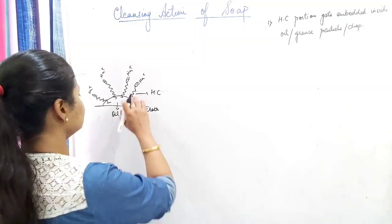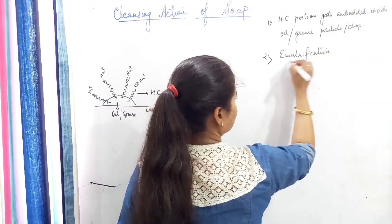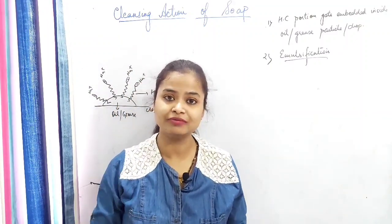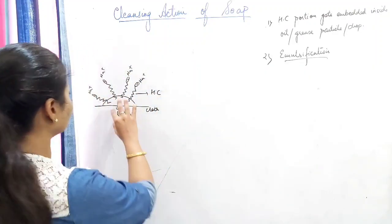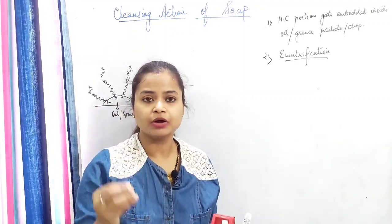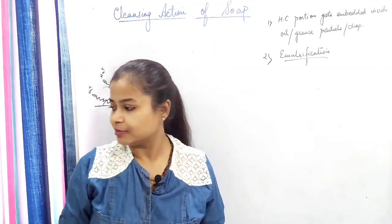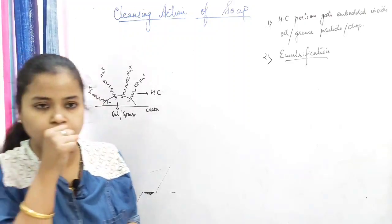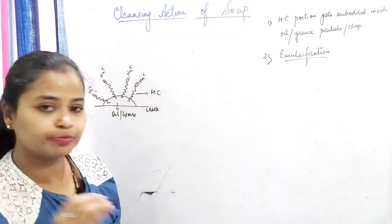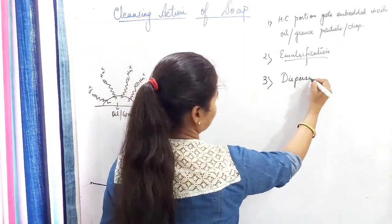The second process is emulsification. Emulsification is the process of breaking down of the bigger oil droplet into smaller ones. The bigger oil particle is divided into small parts — this process is called emulsification. Emulsification is the breaking up of the bigger oil droplet into smaller oil particles.